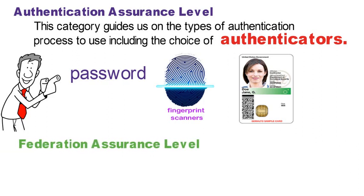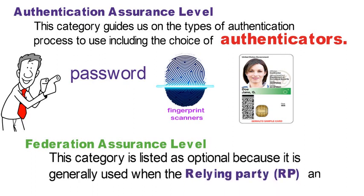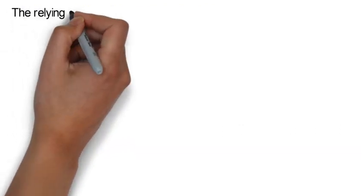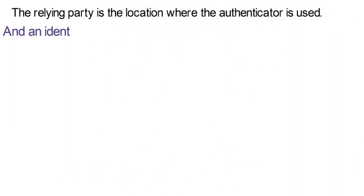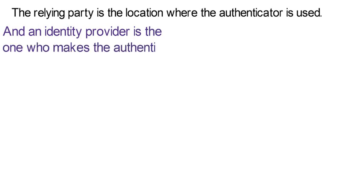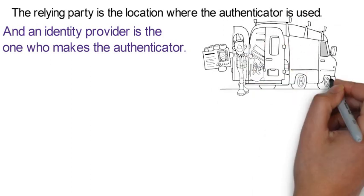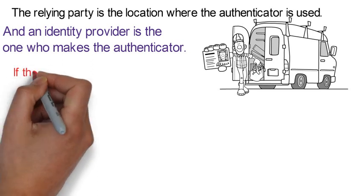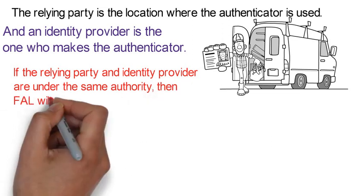The third category is FAL, which stands for Federation Assurance Level. This category is listed as optional because it is generally used when the relying party and the identity provider are separate entities. The relying party is the location where the authenticator is used, and an identity provider is the one who makes the authenticator. Think of the relying party as the bartender checking your driver's license, and the identity provider as the motor vehicle authority that issued your license.